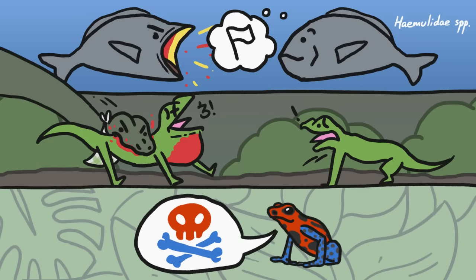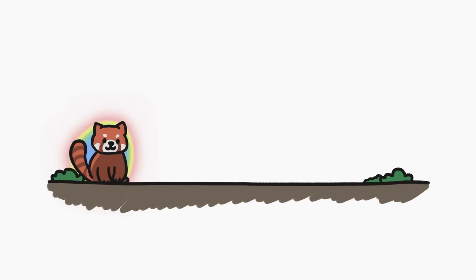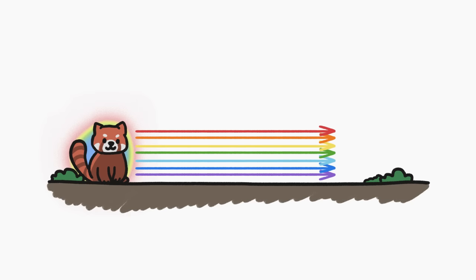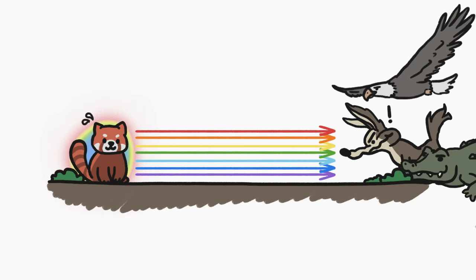But because of the risks associated with being conspicuous, a lot of animals that do use bright colors to communicate flash those colors quickly, then stash them away. At least, this is how things play out on land. Since air doesn't absorb or scatter much light, bright colors can generally be spotted from pretty far away. In other words, the risks of being brightly colored tend to be pretty high for landlubbers.